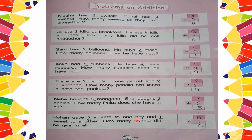Next: Rohan gave 5 sweets to one boy and 1 sweet to another. How many sweets did he give in all? Write 5, then write 1, and add them. 5 plus 1 is equal to 6. He gave 6 sweets to his friends.